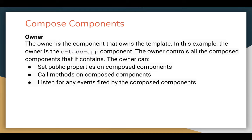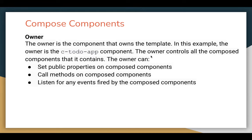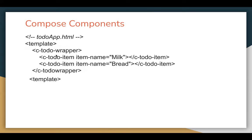Let's understand the details about these components. First we have the owner. The owner is the component that owns the template. In this example, the owner is the todo-app. So the todo-app component is having all the components called, so this is the owner component. The owner controls all the composed components that it contains. The owner can set public properties on composed components. So if you have any public properties in todo-wrapper or todo-item, those public properties you can set through the todo-app component.